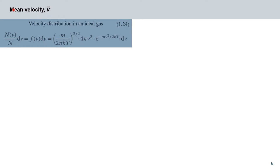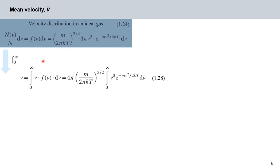To determine the mean velocity v̄, we divide the sum of all velocities by the number of particles. We obtain the sum of all velocities by integrating the product n(v) · v, then dividing by N to get the mean over one particle. To solve the integral, we expand v by substituting x = v · √(m/2kT), allowing us to pull out all constant terms, leaving an integral of the form ∫₀^∞ x³ · e^(−x²) dx.